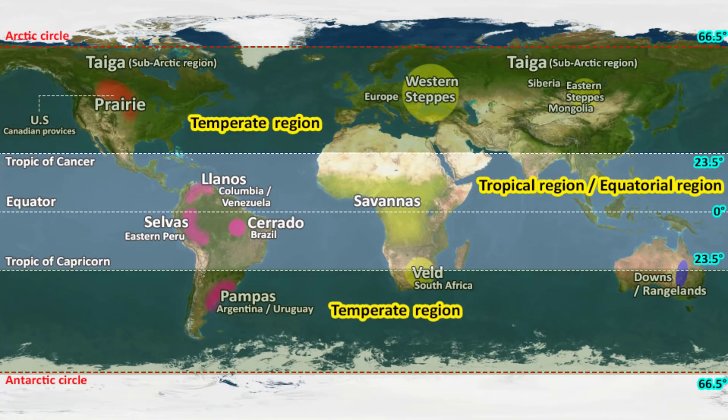Looking at the temperature in the temperate region, as per the Copenhagen climate classification, it is somewhere between –3 to 18 degrees Celsius. That means the average yearly temperature in this region is not extreme, because the meaning of the word temperate is moderate. Similarly, precipitation is moderate here — rainfall is just enough for grasses and shrubs to grow, but not for tall plants and trees.